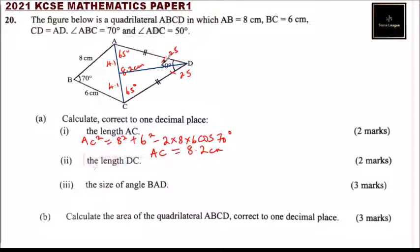Sine 25, because this is the right angle, the sine of this angle equals opposite over hypotenuse. We are looking for DC. So sine of angle 25 equals opposite, which is 4.1, divided by the hypotenuse, which is DC. This implies that DC equals 4.1 divided by sine 25, which gives 9.7 cm. So this is 9.7 cm and this is 9.7 cm because they are equal, it is an isosceles triangle.